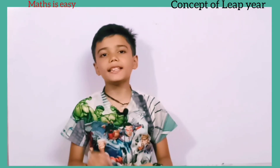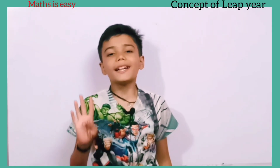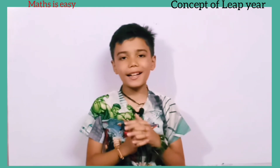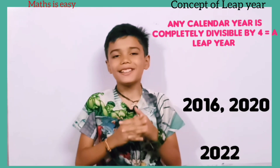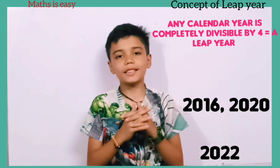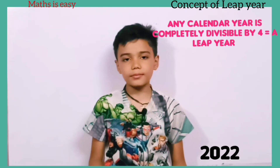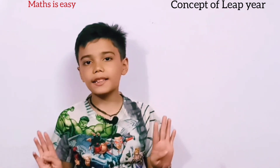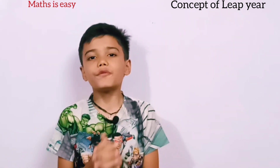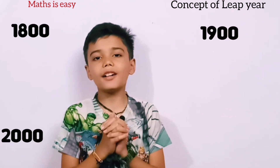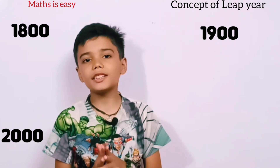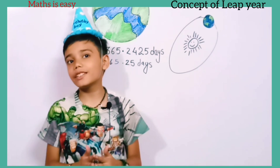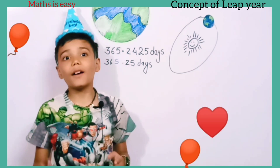If the year is evenly divisible by four and the remainder comes to zero, then the year is a leap year. For example, 2016 and 2020. But for century years, those which are evenly divisible by 400 are leap years — for example, 1800, 1900, and 2000.